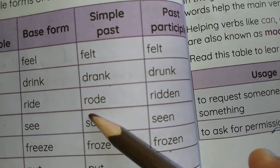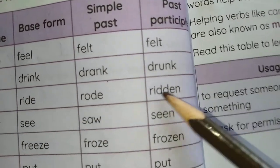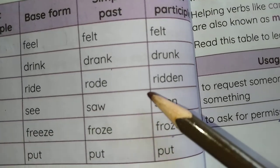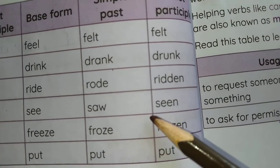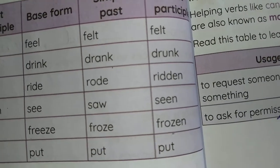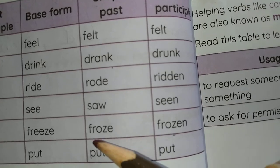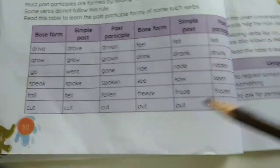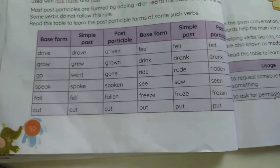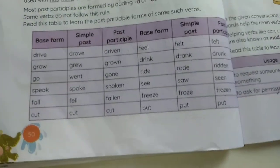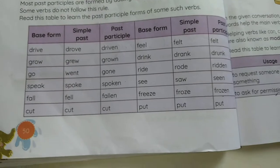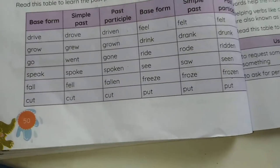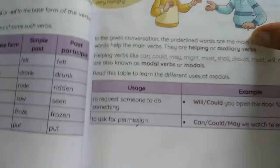Continuing the verb forms table: ride/rode/ridden, see/saw/seen, freeze/froze/frozen, put/put/put. Children, you have to speak with me and try to say them — speak them five times so that you can learn them. Have fun while reading.